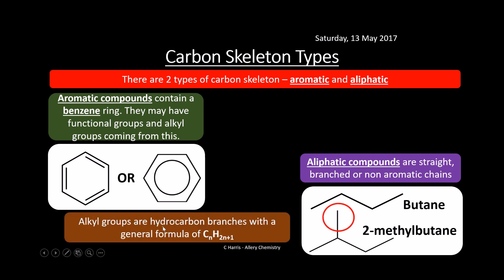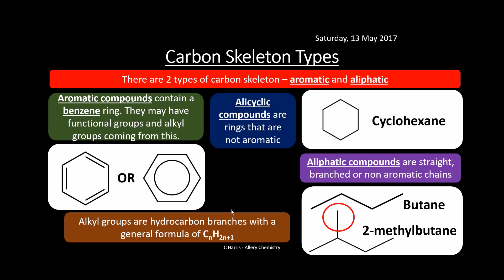Alkyl groups are hydrocarbon branches and always have the general formula CnH2n+1, because one of the spaces has been used to bond with a carbon on the chain. Alicyclic compounds are basically rings that are not aromatic — aromatics have three double bonds or a circle drawn in the middle. Alicyclics are aliphatic compounds which loop together to form cyclo-compounds, like cyclohexane. Don't get these two confused — for aromatics, look for that circle in the middle.